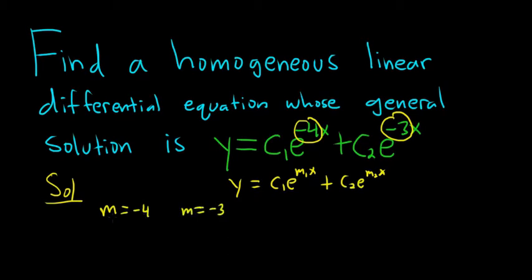So because one of the roots is m equals negative 4, that would mean that m minus negative 4 would be a factor. In other words, m minus negative 4 is a factor. That's the same thing as saying m plus 4 is a factor. So this is a factor of the characteristic equation.